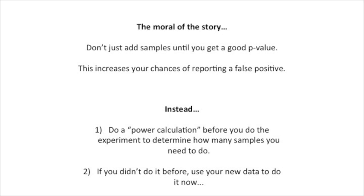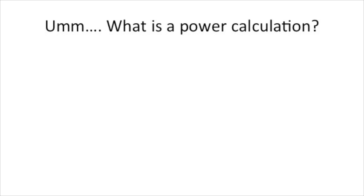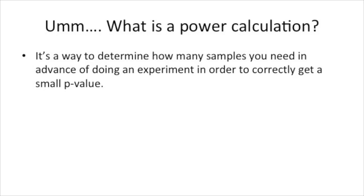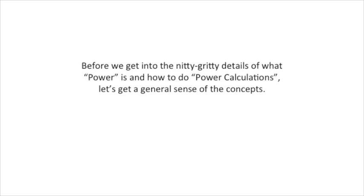Instead, do a power calculation before you do the experiment to determine how many samples you need. Alternatively, if you didn't do it before, use your new data to do it now. A power calculation is a way to determine how many samples you need in advance of doing an experiment in order to correctly get a small p-value. Before we get into the details of what power is and how to do power calculations, let's get a general sense of the concepts.